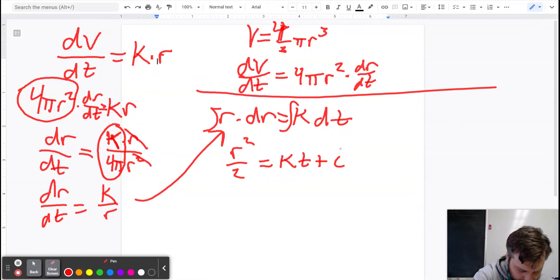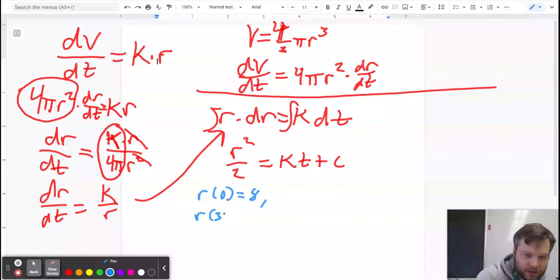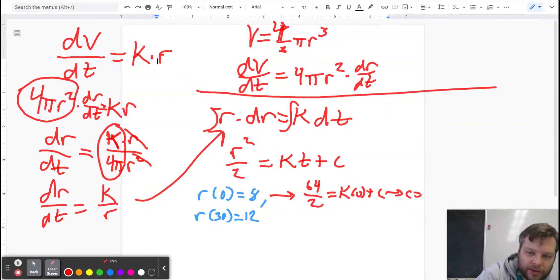So we have r squared over two equals kt plus c. We know that it's eight centimeter radius at the beginning and 12 centimeters when it's cooked 30 minutes later. So we know that r of zero is eight.